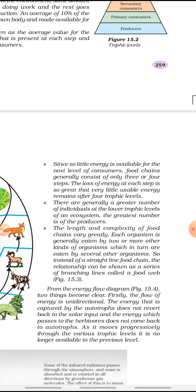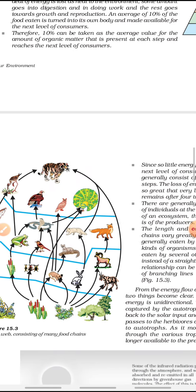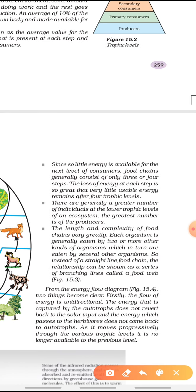Because of this, food chains generally consist of only 3 to 4 steps. Each ideal food chain has at least 3 or 4 steps. If there are more, the last members won't receive sufficient energy. The loss of energy at each step is so great that very little usable energy remains after 4 trophic levels.